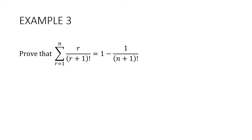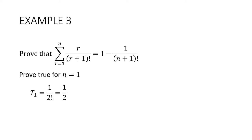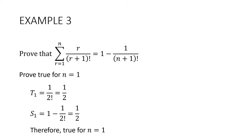Example 3. Prove that the sum from r equals 1 to n of r over r plus 1 factorial equals 1 minus 1 over n plus 1 factorial. This is the same process, just using sigma notation, which is a bit more concise. Step 1: prove true for n equals 1. To get the first term, substitute 1 in, giving 1 over 2 factorial, which is a half. The sum of the first term, substituting into the right-hand side, gives 1 minus 1 over 2 factorial, which is 1 minus a half, equaling a half. Therefore it is true for n equals 1.